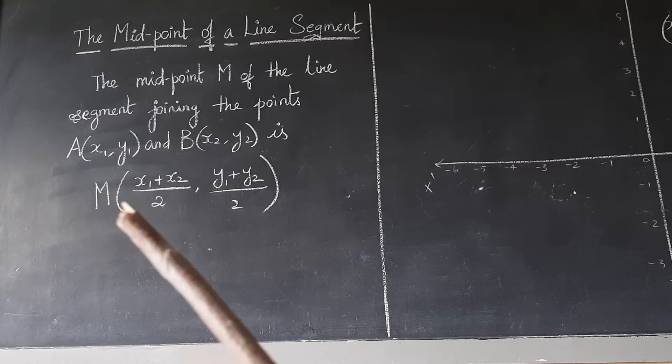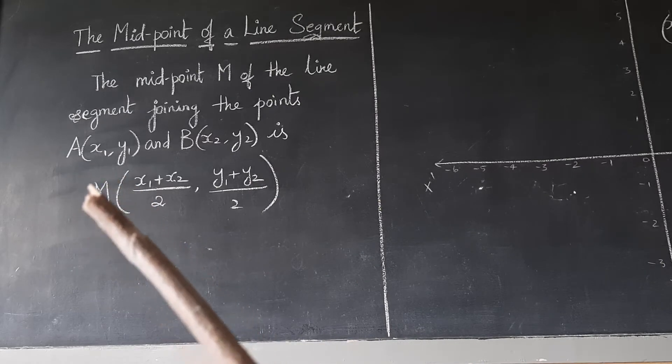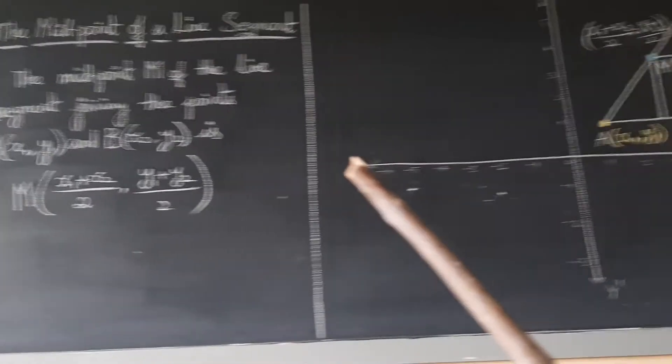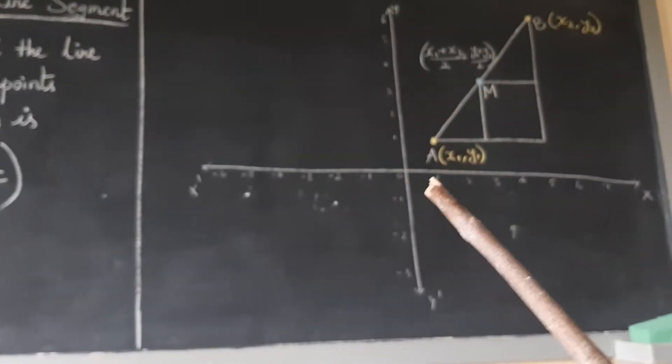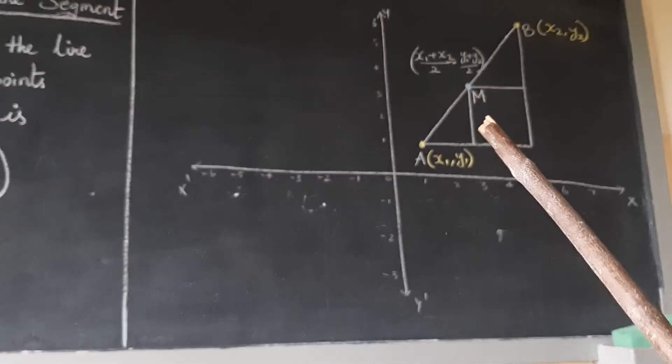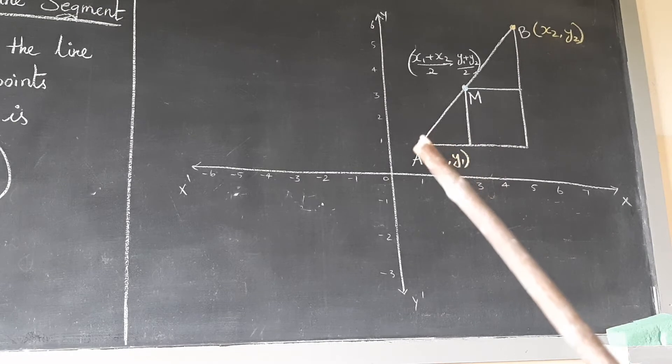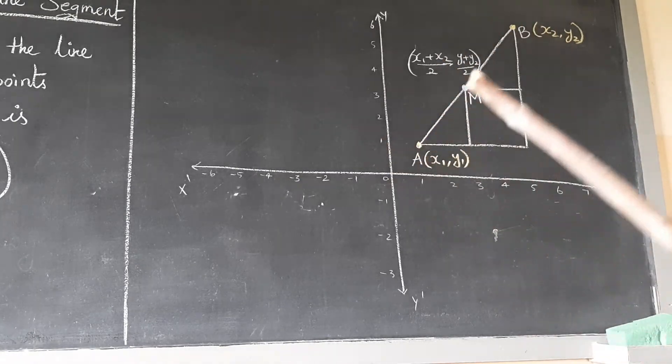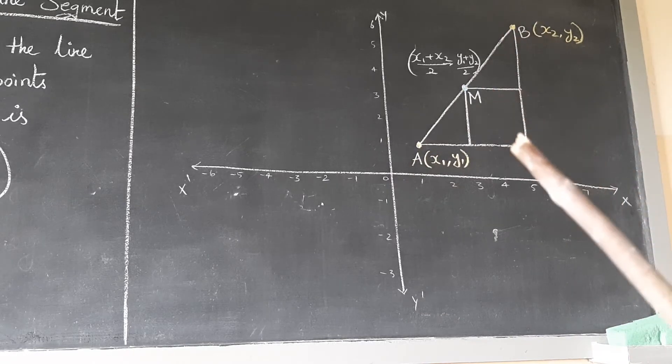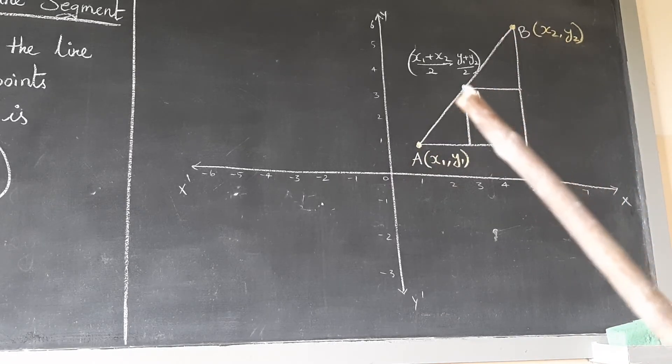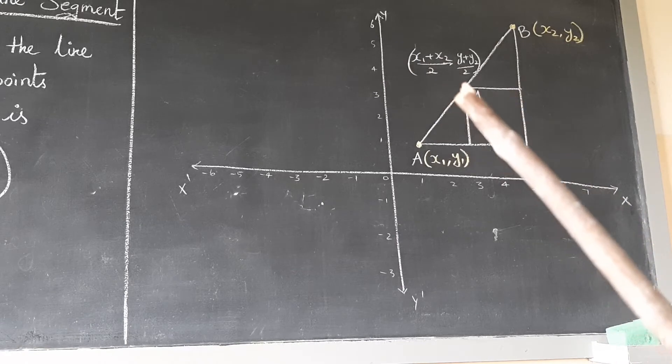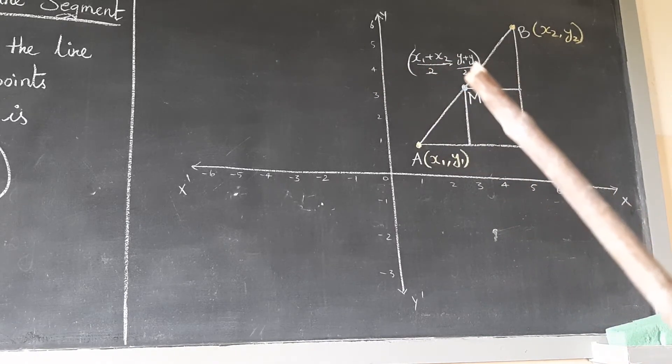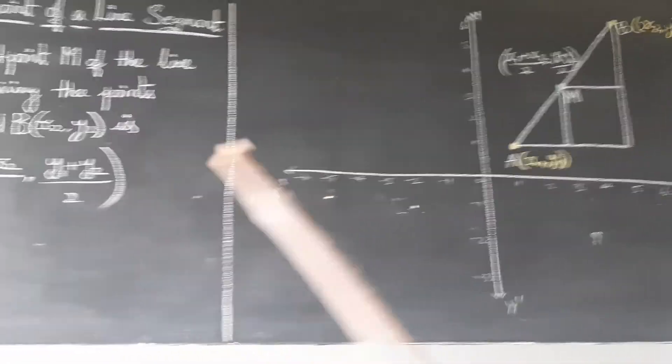We can find the distance between the midpoint M and points A and B. The formula is M = ((x1 + x2)/2, (y1 + y2)/2). Okay, let's see one sum.